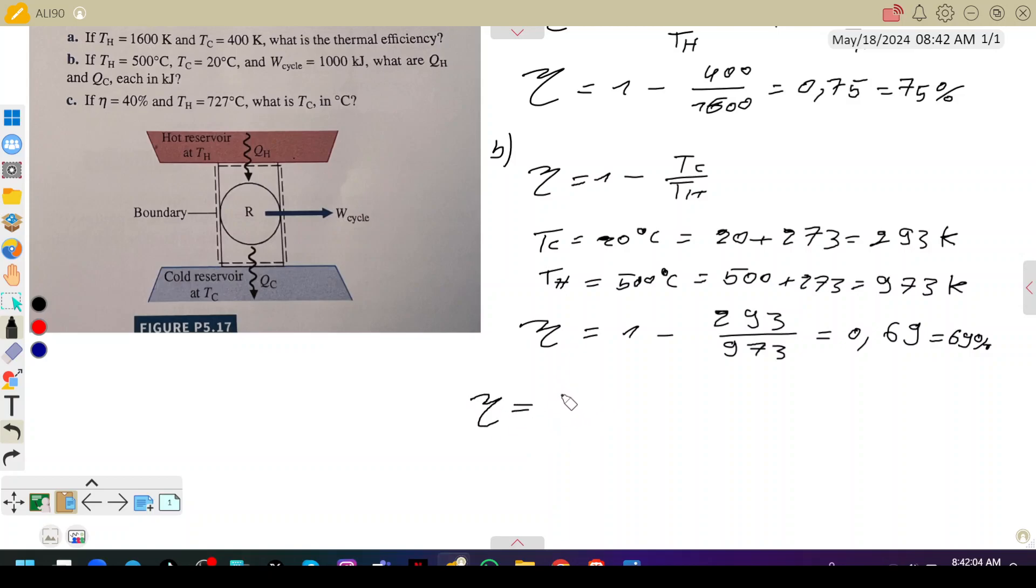Tau is also defined as W divided by Qh, which means we need to calculate Qh. Qh would be W divided by τ. Replacing each term with its value, Qh would be equal to 1000 kilojoules divided by 0.69. So 1000 divided by 0.69 is 1449 kilojoules.